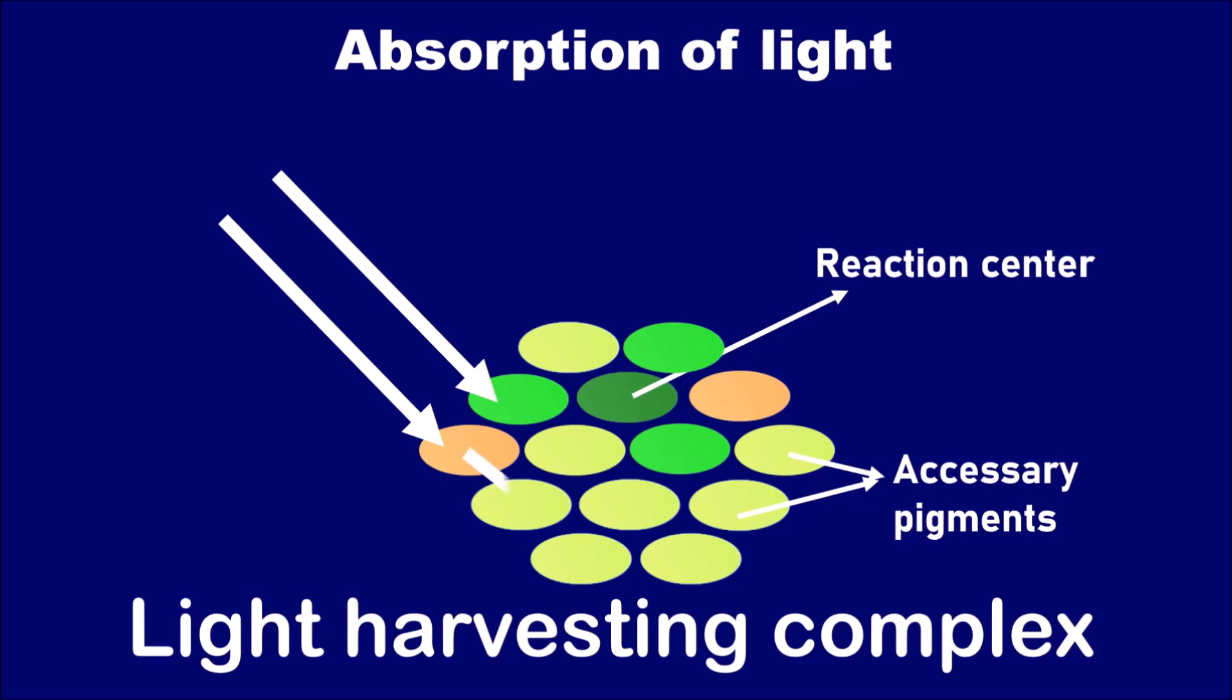the light energy is harvested cumulatively to the reaction center due to which the electrons are excited in the reaction center or chlorophyll A. On the basis of absorption of frequency of light, two types of photosystems are formed with the light harvesting complex such as photosystem 1 and photosystem 2.